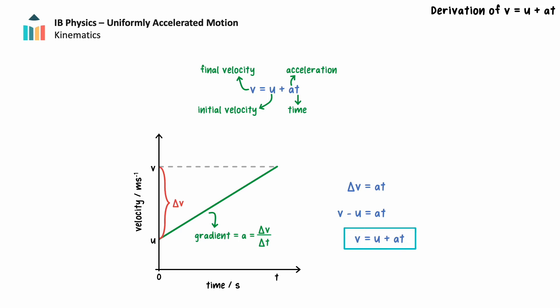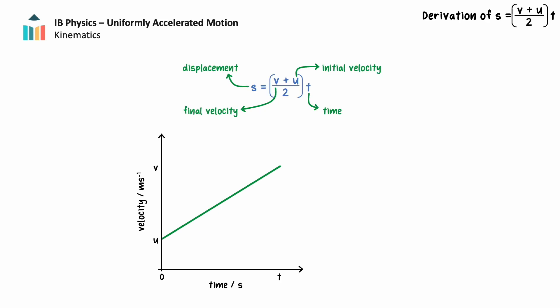Next, we'll look at our first formula involving displacement. The object's displacement, s, is equal to the average velocity, (v + u) / 2, multiplied by the time, t. We'll again focus on a velocity-time graph. The displacement can be calculated by the area under the velocity-time graph.